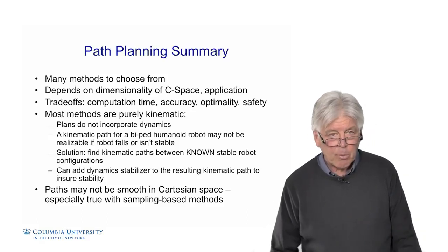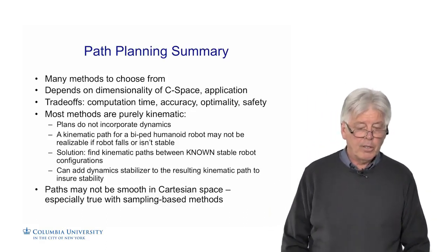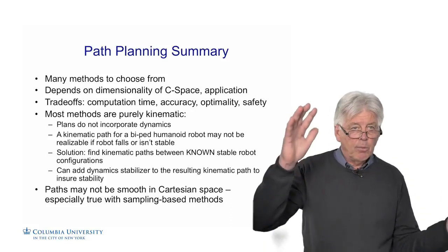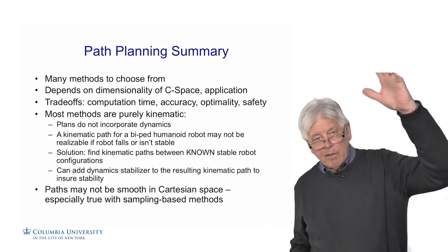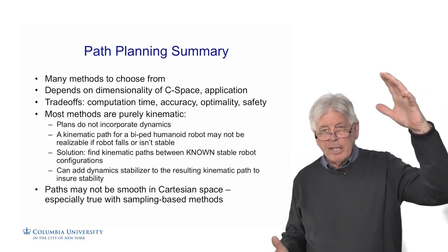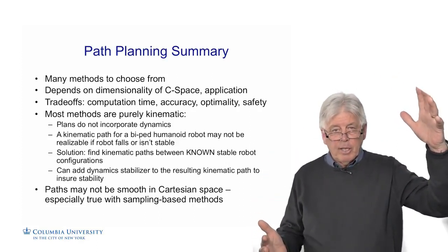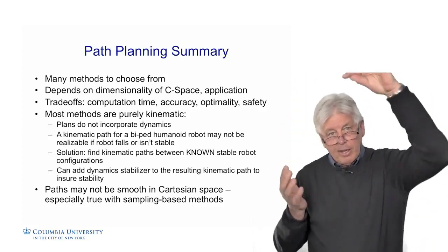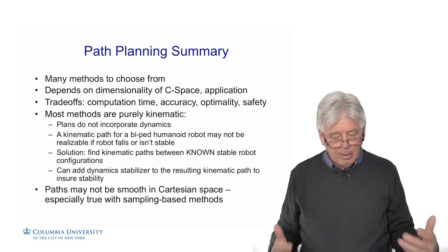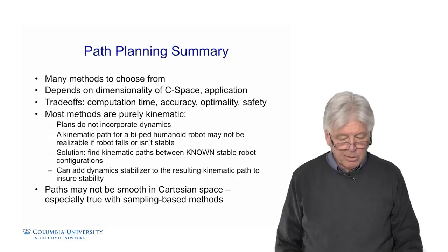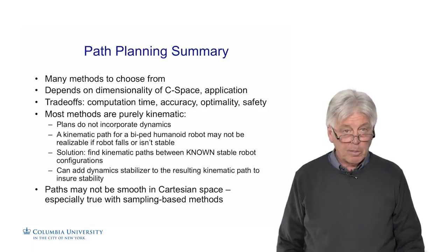This is very important to remember, particularly with humanoid robots: the paths may not be smooth in Cartesian space. It's mostly true with the sampling-based methods. For example, if I'm a robot and I want to move from this configuration to that configuration, it seems like this would be a nice, smooth way to do it. But if I use an RRT or some other sampling-based planner, if I go from this configuration to this, I may do all this and then get to this. So we have a lot of extraneous motion that we sometimes have to get rid of. These are things to consider when you do path planning for robots particularly.